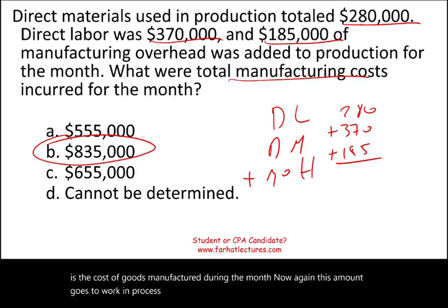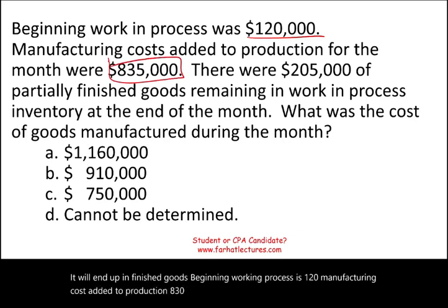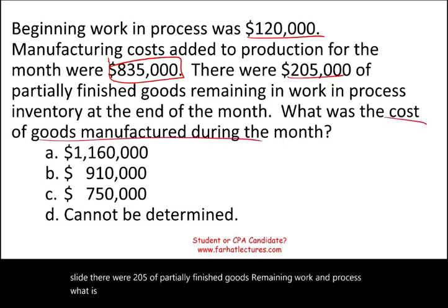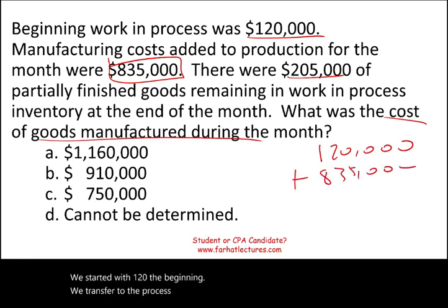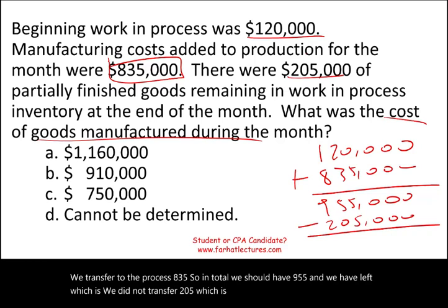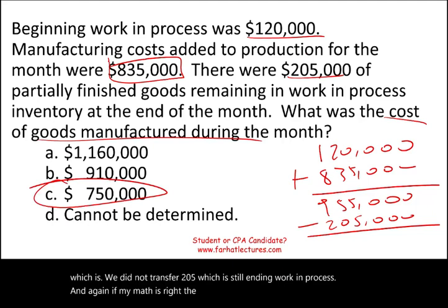Beginning work in process is $120,000. Manufacturing cost added to production is $835,000. There were $205,000 of partially finished goods remaining in work in process. What is the cost of goods manufactured? We started with $120,000, transferred $835,000 to the process — total $955,000 — and $205,000 remains as ending work in process. Cost of goods manufactured is $955,000 minus $205,000, which equals $750,000.